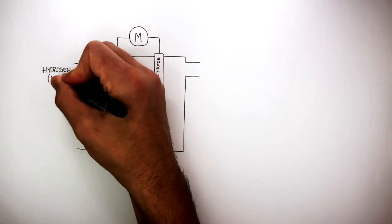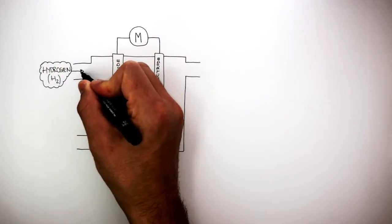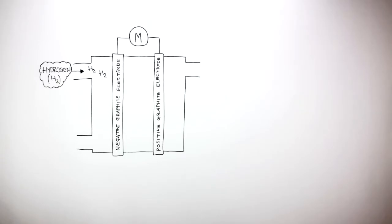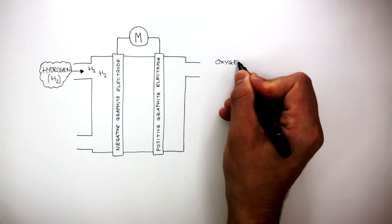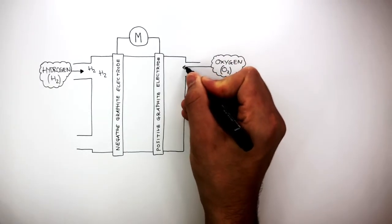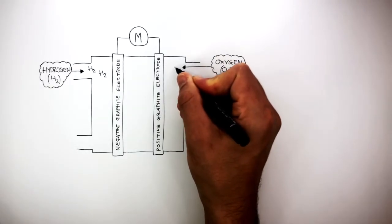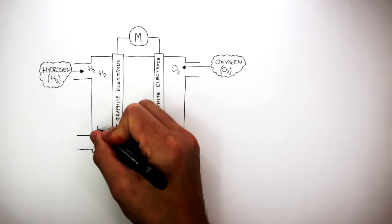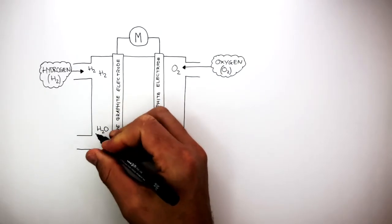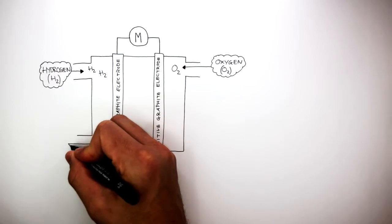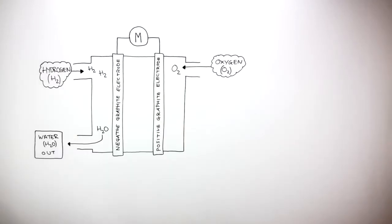You need to know: hydrogen enters through here into the hydrogen fuel cell. Oxygen, O2, enters through here into the fuel cell, and water, H2O — the only product — exits through here from the hydrogen fuel cell.